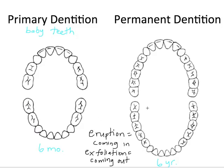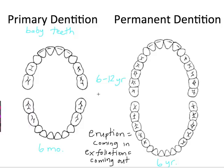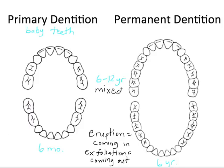Starting at around six months, we get eruption of the primary teeth. By about six years, we start getting eruption of the permanent teeth, and it takes until about age 12 for the last baby teeth to be exfoliated and completely replaced by permanent teeth. This transition period from about ages six to twelve is called the mixed dentition — when we have a mix of both primary and permanent teeth. It takes a little longer for the third molars, which can come in as late as age 18, 19, or 20.